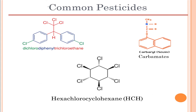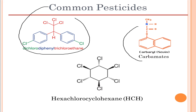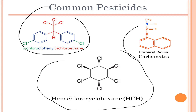Moving on to chemical pesticides, some common examples include DDT (dichlorodiphenyltrichloroethane), carbamates, and hexachlorocyclohexane (HCH). These are some of the common structures and important pesticides that are widely used.